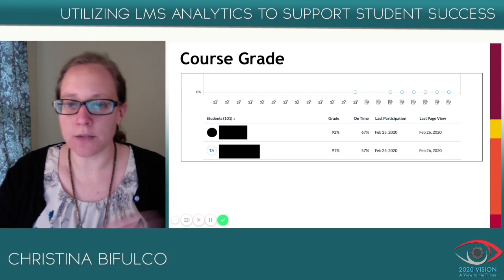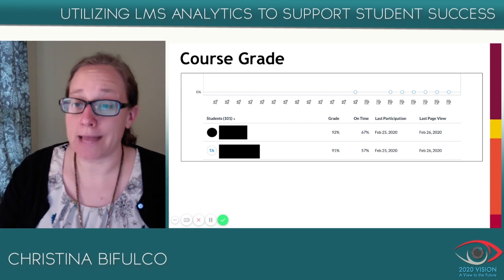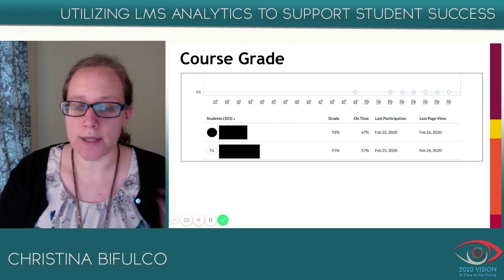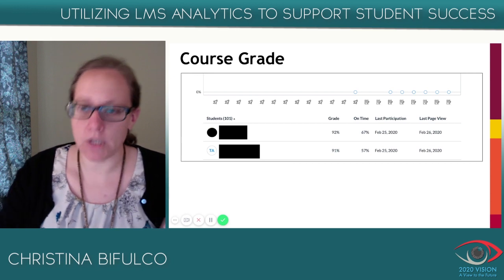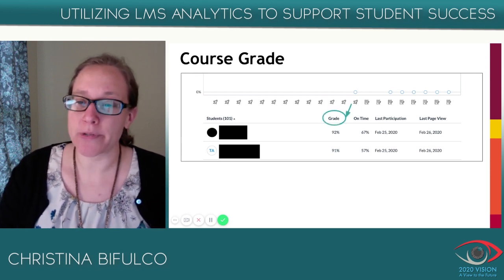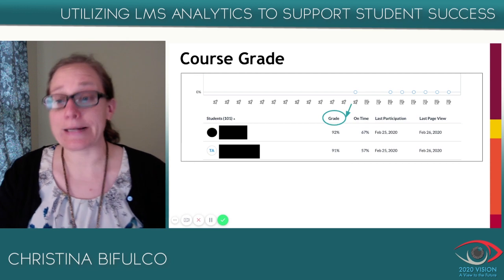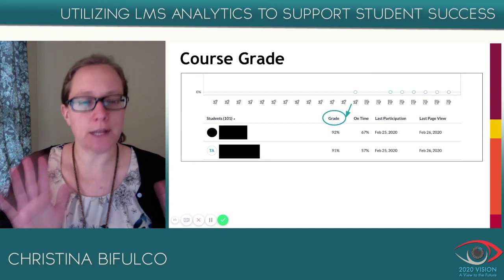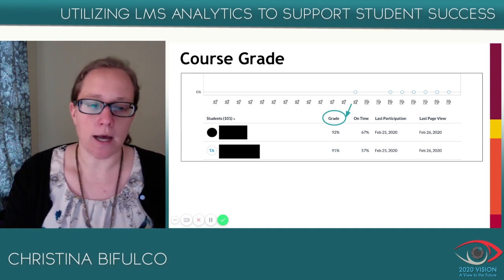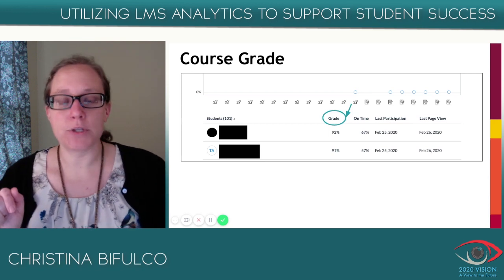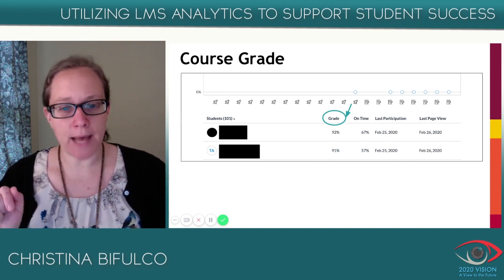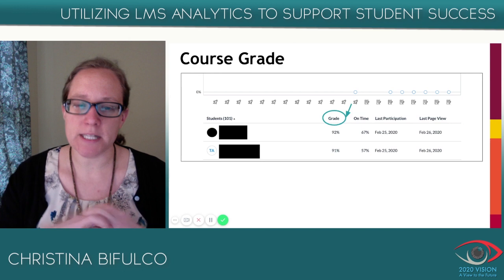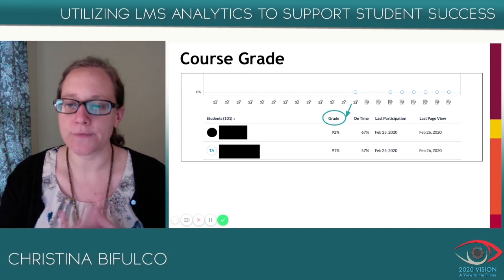Just like the other screens, under Course Grade you'll see a list of all the students with their name and email. It'll show you their grade, the percentage of assignments they submitted on time, their last participation, and their last page view. The last participation and last page view are things you could also see from the People tab within Canvas, and the grade from the gradebook — but the on-time percentage is not something you'd see in the gradebook. This view combines those elements in one location.